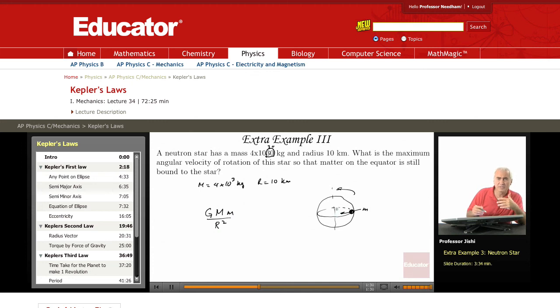Now, that force of gravity is towards the center. There's also the normal force, Fn, which is up, vertically up, opposite. So minus Fn, that's the net force towards the center.